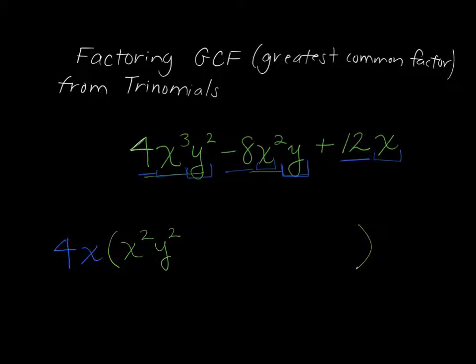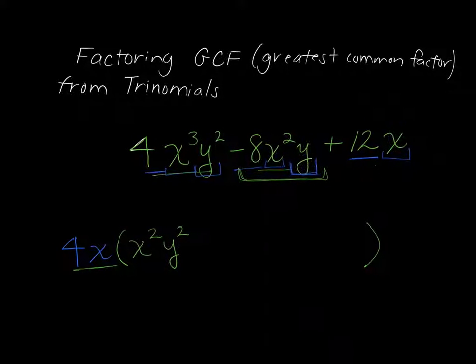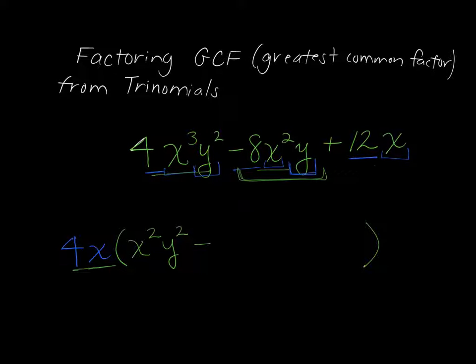Let's move on to the next term, the middle term here. 4 times what would give us the negative 8? Negative 2. And x times what factor would give us the x squared? Just x. And we have a factor of y there, and we don't have any y's outside, so what do we have to put here? Just a y.